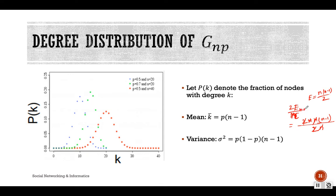When E equals E_max, the graph is a complete graph with average degree n−1. For G(n,p), since p is the probability that any two nodes are connected, the average degree becomes p × (n−1). We can also calculate the variance, which is p × (1−p) × (n−1).